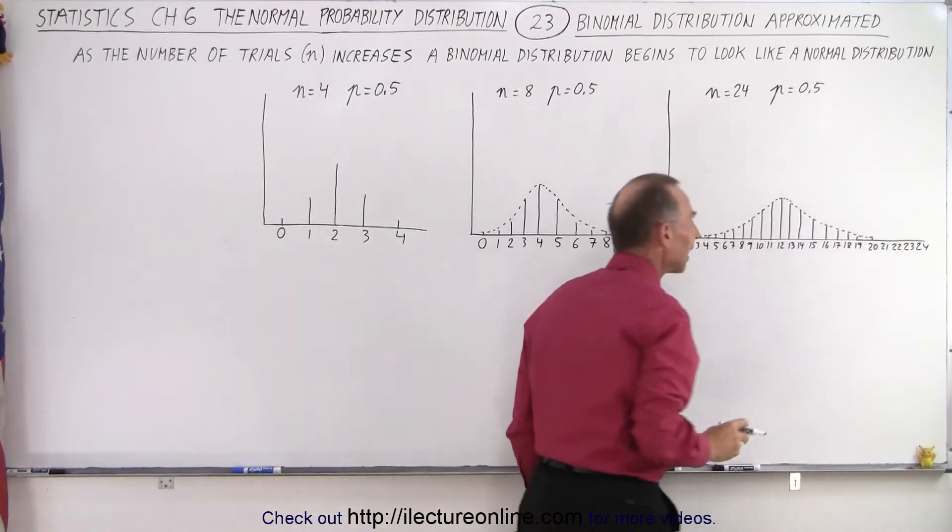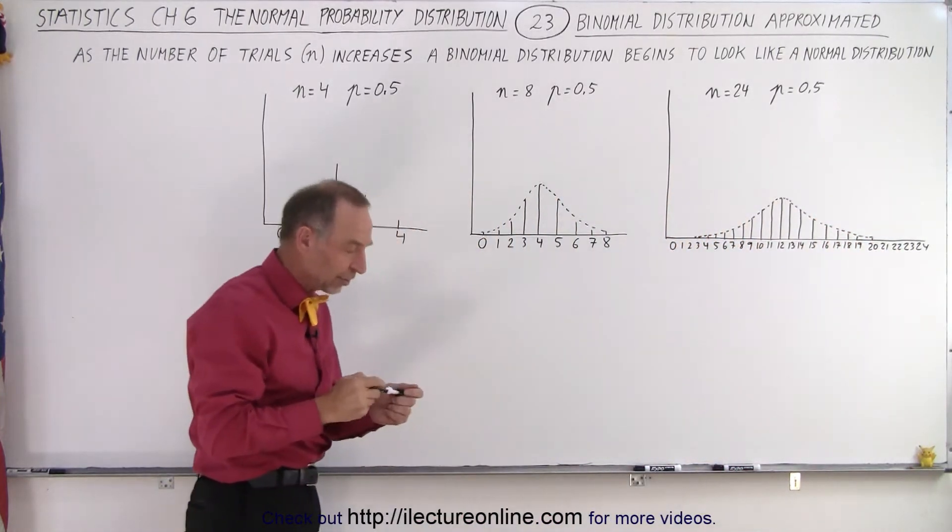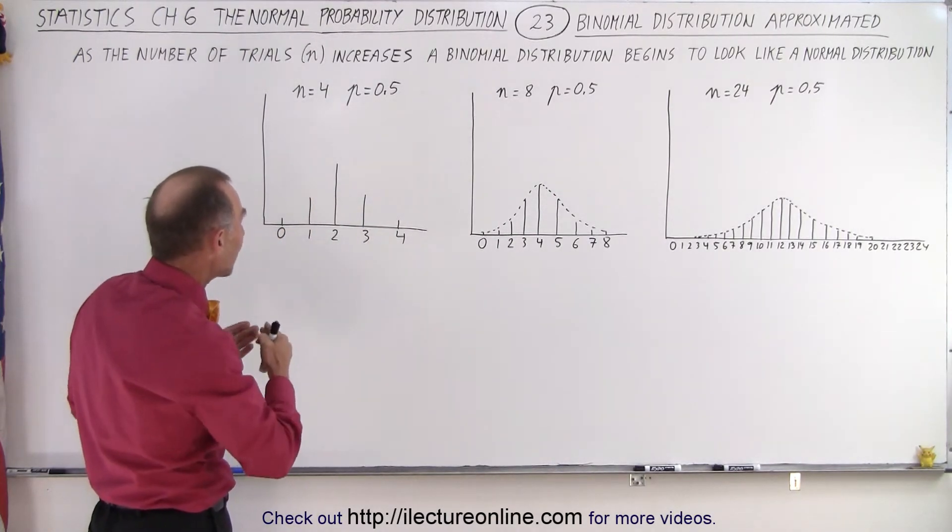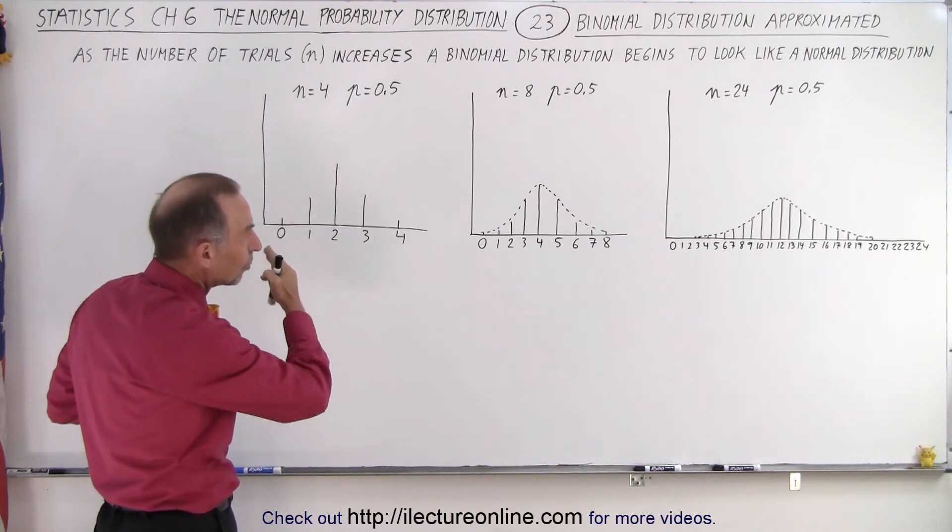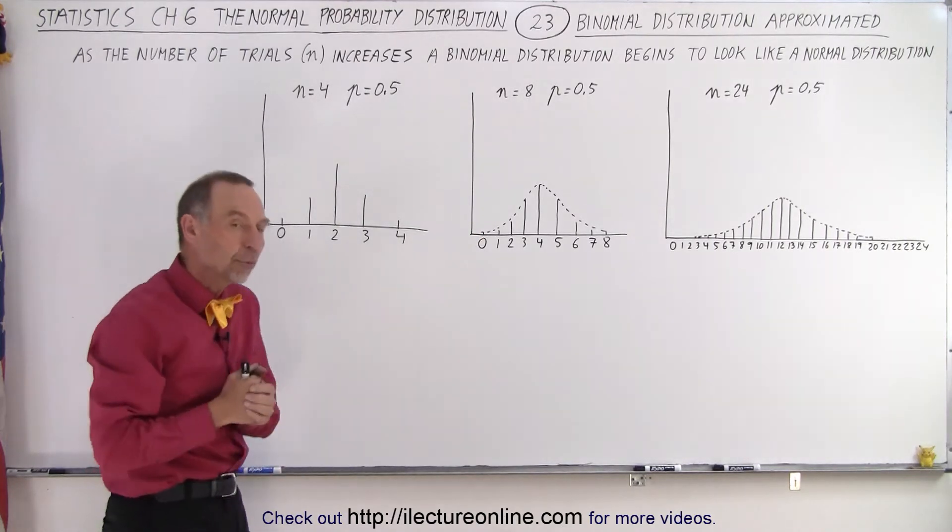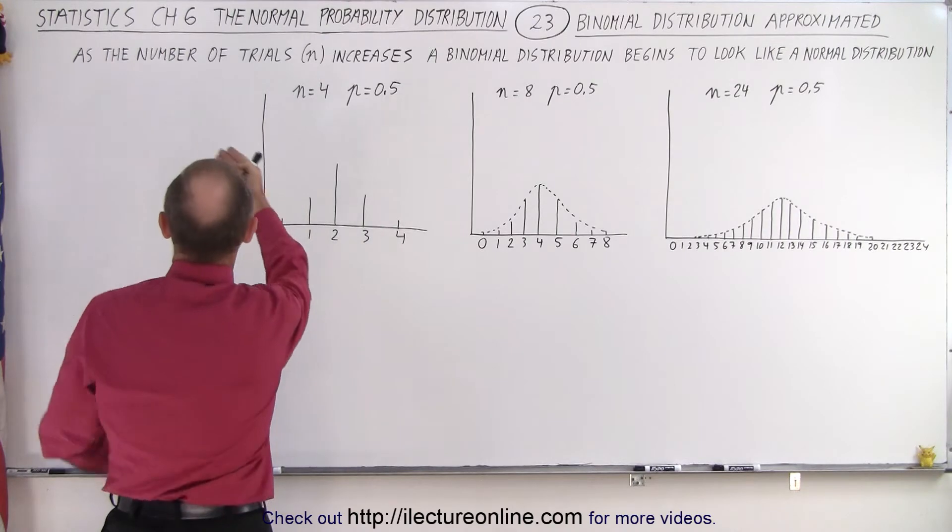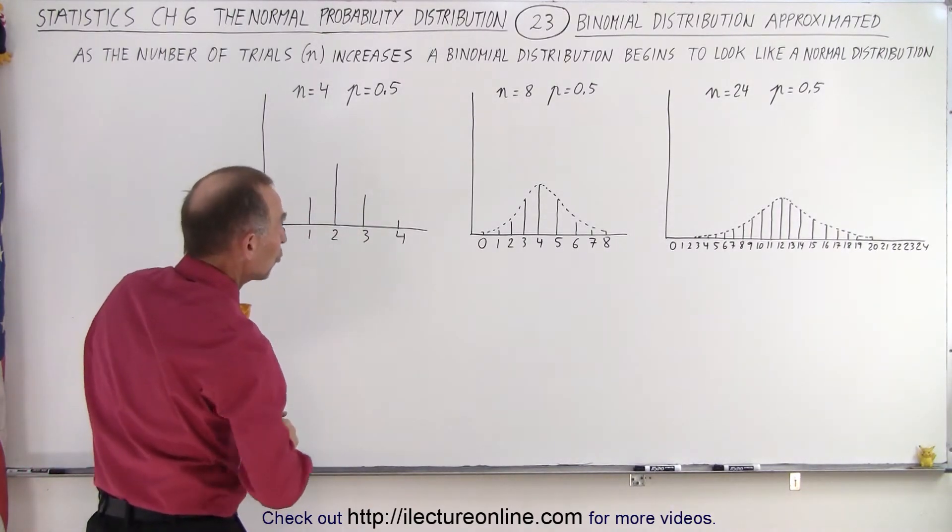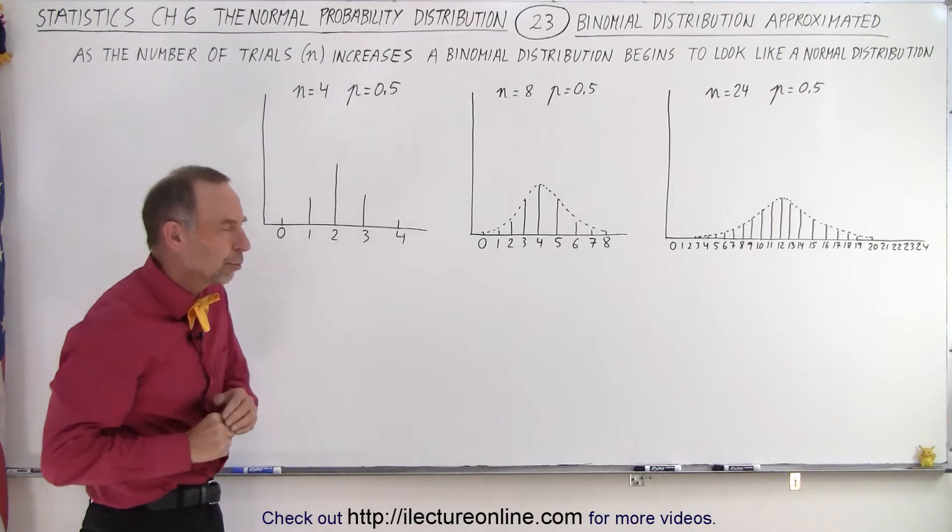So it looks like when the number of trials gets to be relatively large, the graph that we get from a binomial distribution begins to mimic a normal distribution. That's why here we say as the number of trials n increases, a binomial distribution begins to look like a normal distribution.